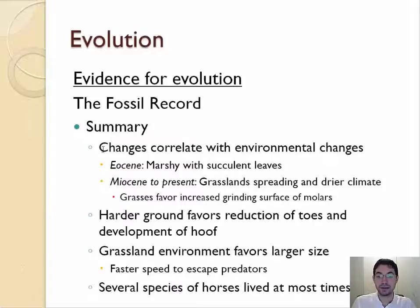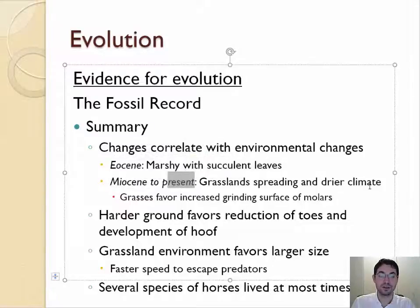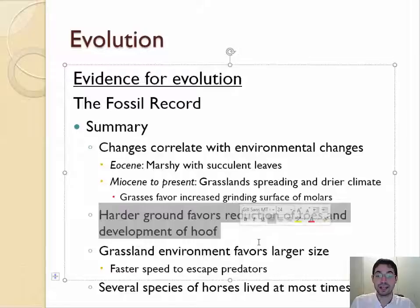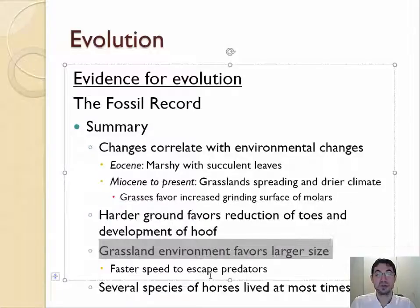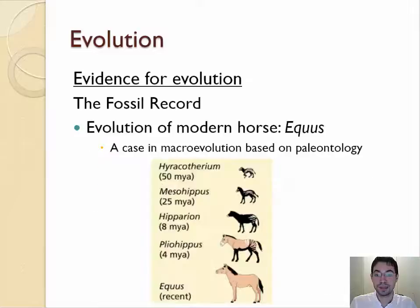In summary, these changes corresponded with environmental changes. As we went from the Eocene to the Miocene to the present, the environment got drier and drier, so there were less leaves and more grasses. The harder, drier ground and more grasses meant that having fewer toes but a hard hoof and bigger teeth to eat the grasses would be useful. Being bigger so you can see above the grasses and run away faster would also be selected for. So over time, the ancestor of the horse got bigger, got bigger teeth, and lost toes.